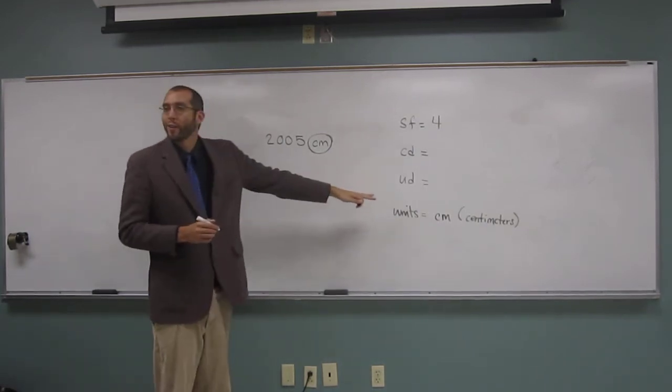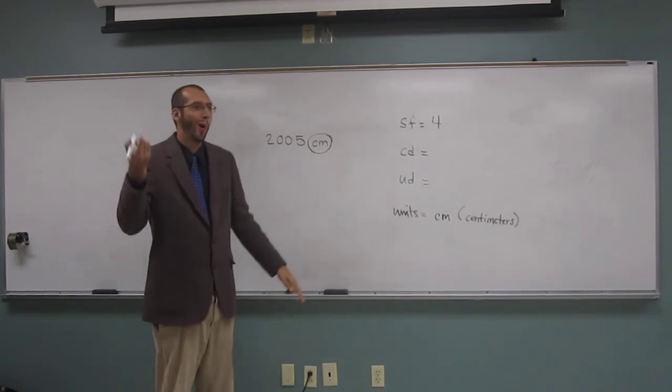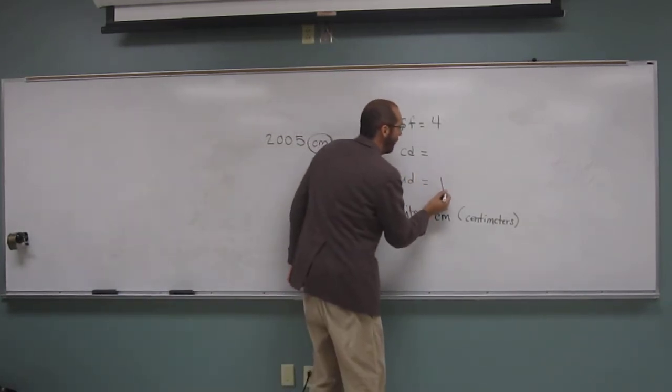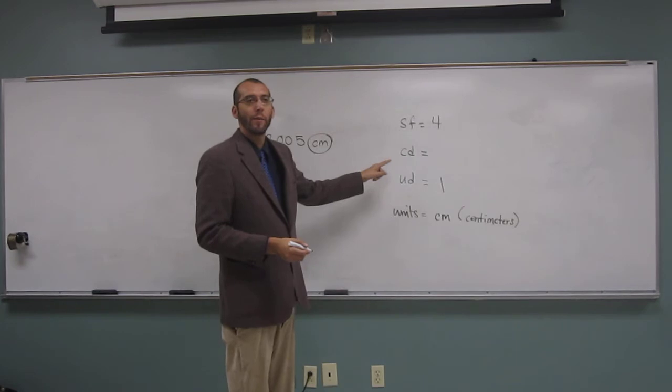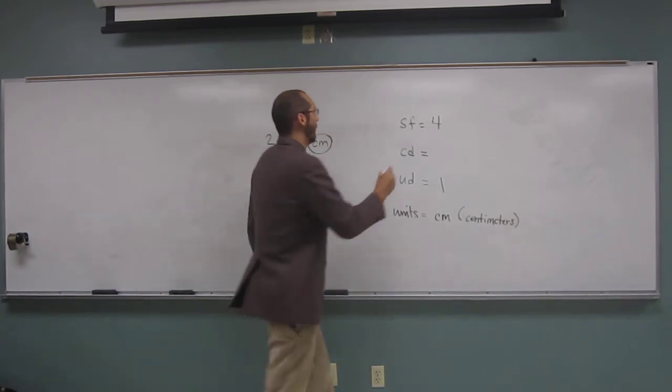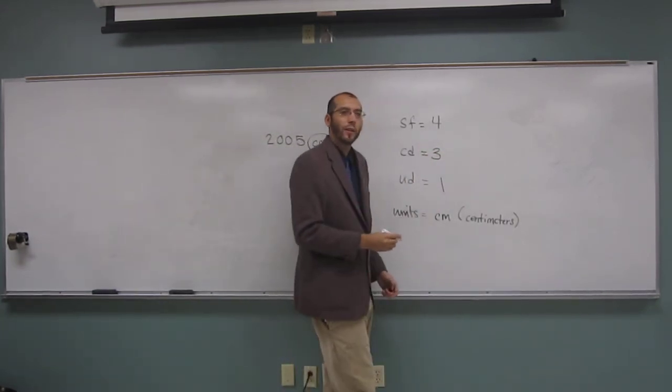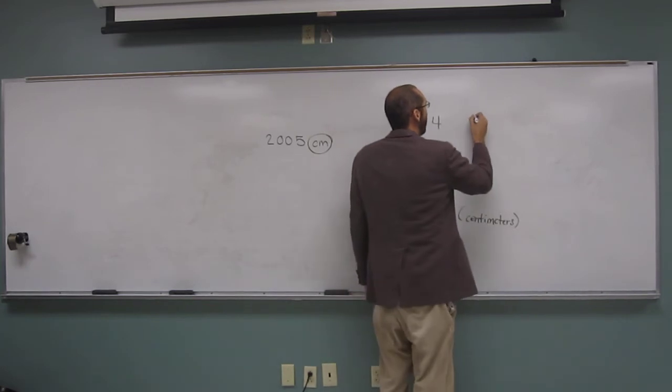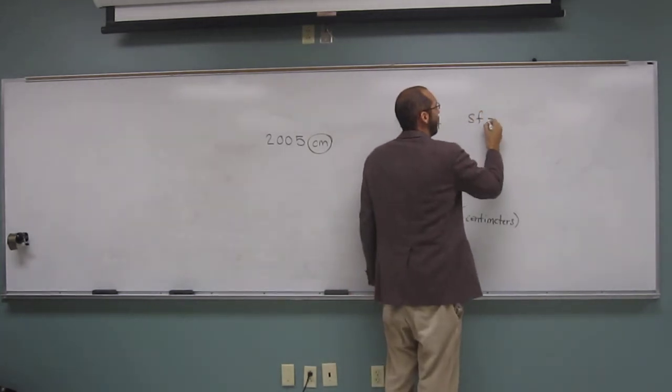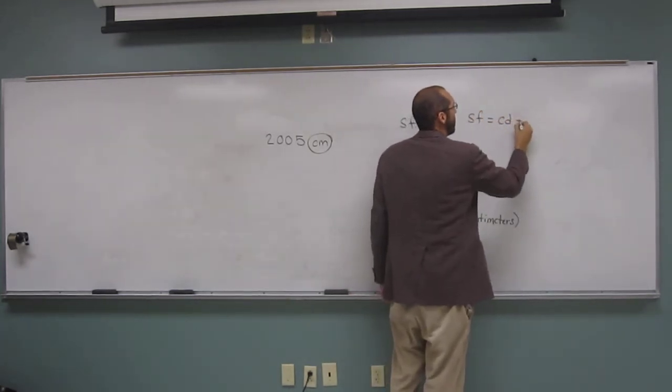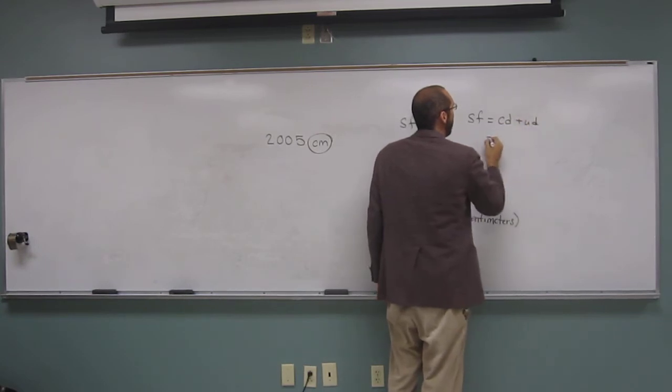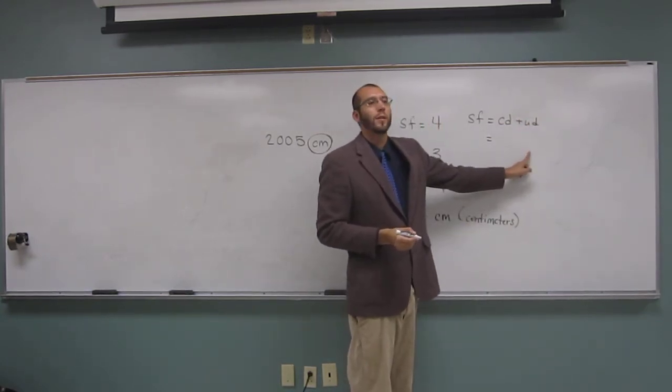So how many uncertain digits do we have? One. One. Always. Right. So we must have how many certain digits? Three. Three. Okay. So why do we say that? Because our significant figure calculation tells us that it's certain digits plus uncertain digits, right? And uncertain digits, what do we say? It's always?